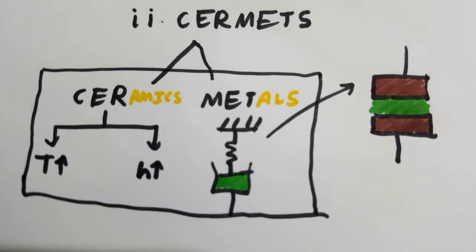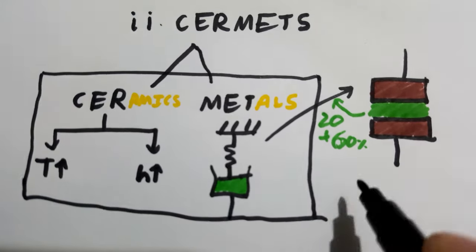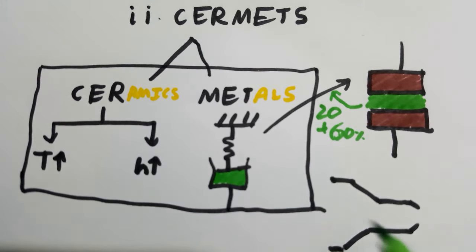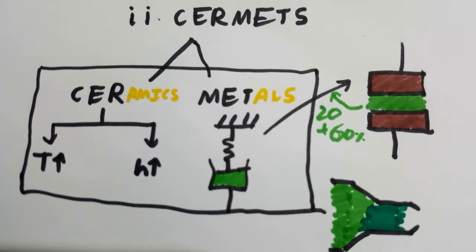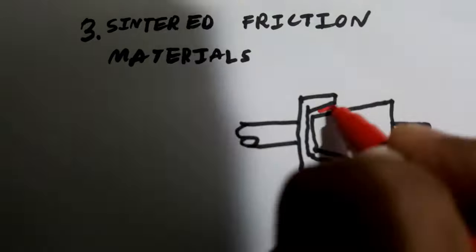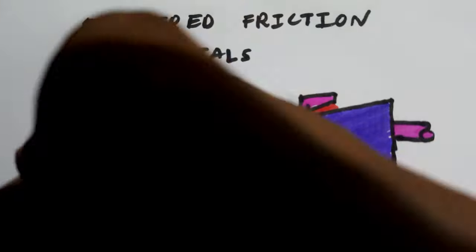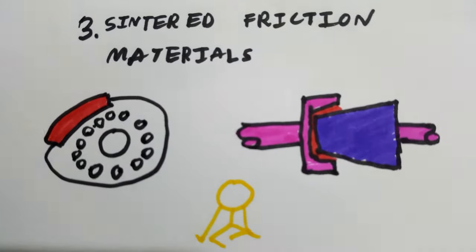Cermets are used in flame holders and nozzles of jet propulsion. Third comes sintered metal friction materials. These materials are used in clutches, brakes, and places where controlled friction is necessary.